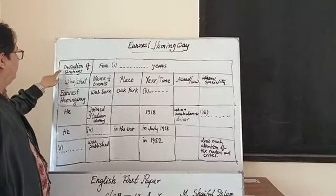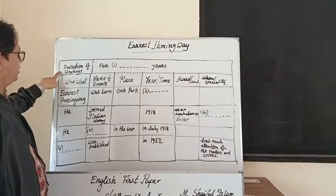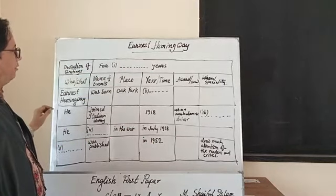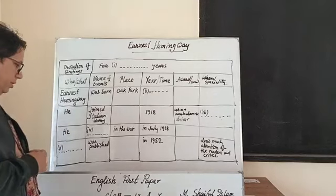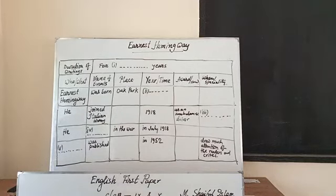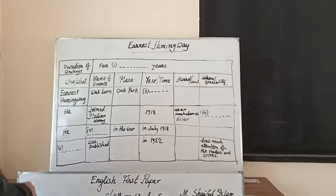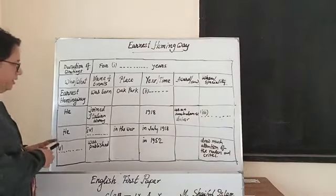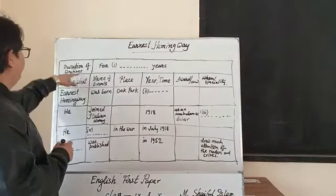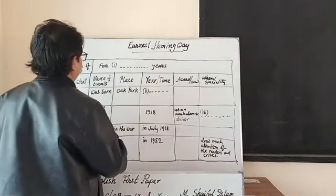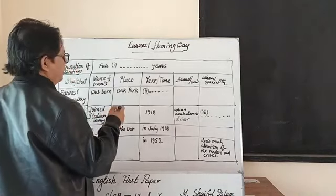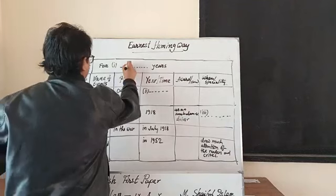First of all, let's see the duration of writing. Ernest Hemingway was an American writer and journalist who wrote most of his books from 1920 to 1950. So we can easily understand the duration of writings: from 1920 to 1950 — that means 30 years.